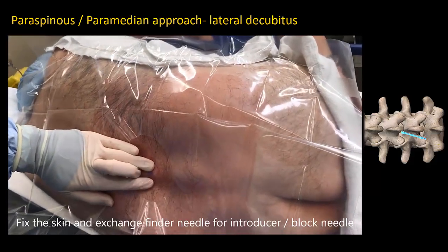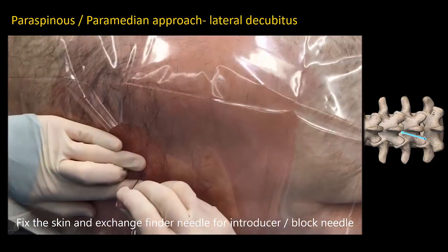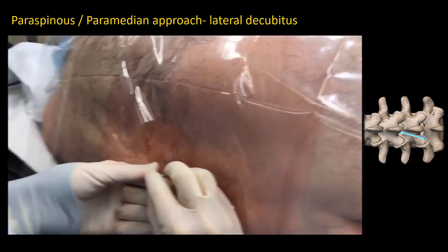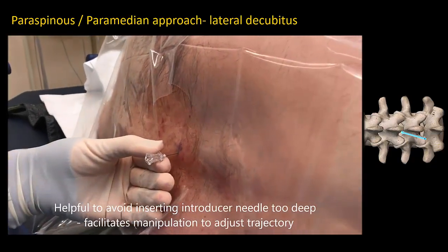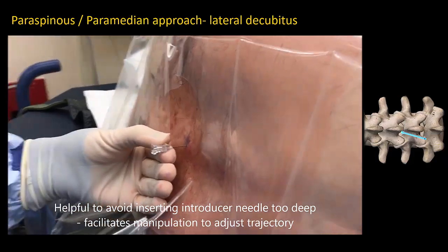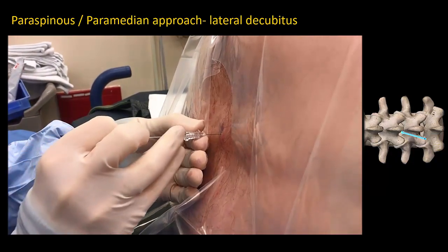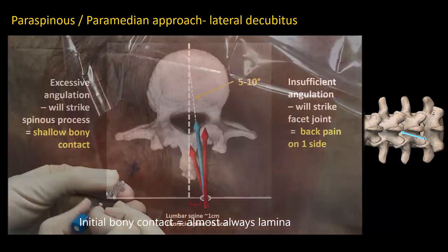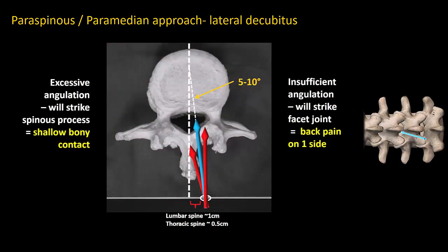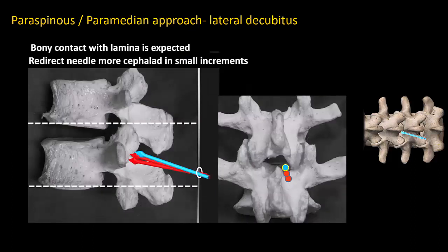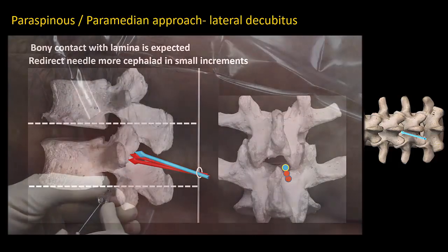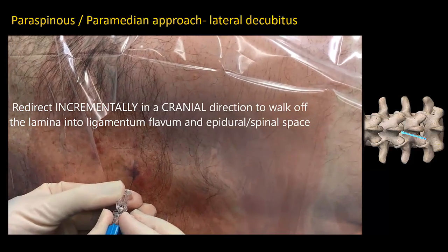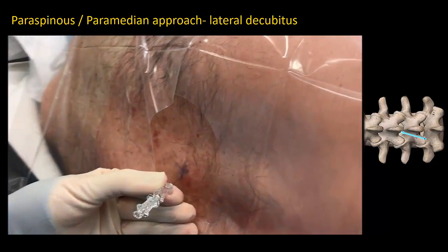Fix the skin and exchange the infiltration needle for the introducer or spinal needle. With an introducer, I tend to only insert it halfway so that it can be easily manipulated to guide spinal needle redirection. The first pass usually results in bony contact, which should not be painful as long as it is gentle. Unilateral pain suggests the needle needs to be angled in a more medial direction, and shallow bony contact means it needs to be angled less medially. The needle should be redirected in small increments cranially until it walks off the lamina into the interlaminar space.